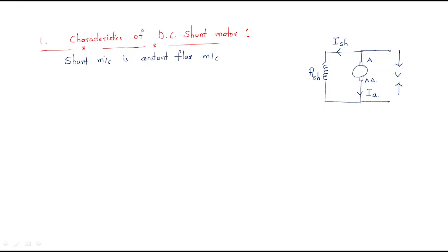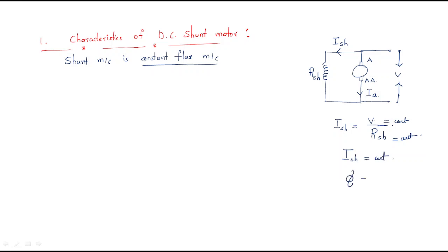Generally, the shunt machine is a constant flux machine. The input supply voltage is constant and the resistance is constant, so the shunt winding current Ish equals V divided by Rsh. Since voltage and resistance are both constant, the flux is also constant — that is why it is called a constant flux machine.